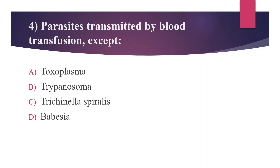Fourth question: Which parasite is transmitted by blood transfusion — except? Option A: Toxoplasma, Option B: Trypanosoma, Option C: Trichinella spiralis, Option D: Babesia. The answer is Trichinella spiralis, because trichinellosis is acquired by eating raw or undercooked meat from infected animals. Parasites that are transmitted by blood transfusion include Plasmodium, Babesia, Toxoplasma, Leishmania, and Trypanosoma.